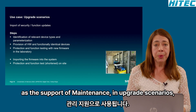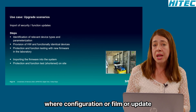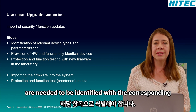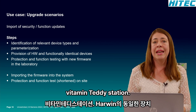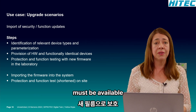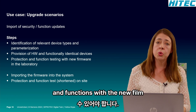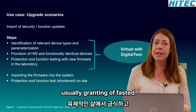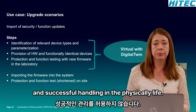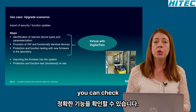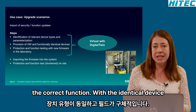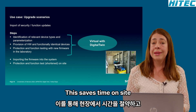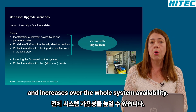The next use case is support of maintenance in upgrade scenarios, where configuration or firmware update is needed in a protection device. Normally, relevant device types need to be identified with the corresponding parameterization, identical devices in hardware and functionality must be available, and testing of protection functions with the new firmware must be run in the laboratory. These steps can be done virtually, granting a faster and successful handling in the physical device. Before installing security or function updates, you can check the correct function with the identical device type and the field-specific parameterization conveniently on the computer, saving time on-site and increasing overall system availability.